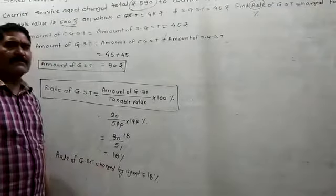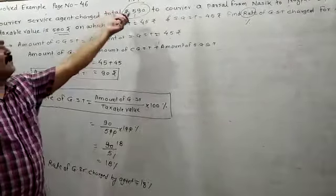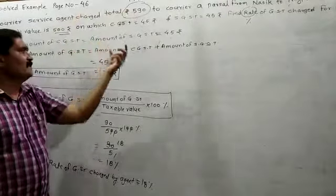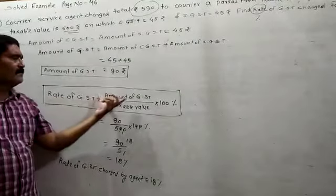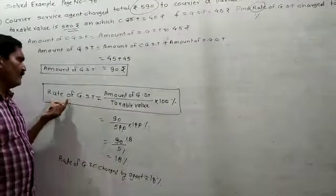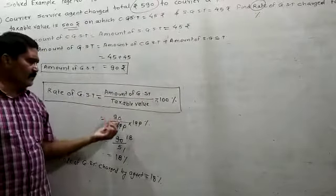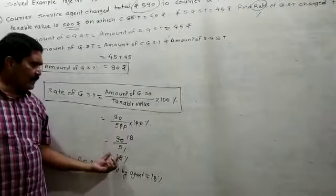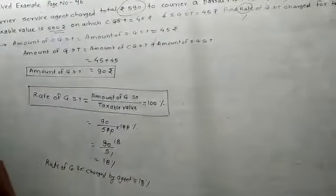Once again, to recap: first find the GST — since ₹590 includes taxable value plus GST, subtract the taxable value to get GST = ₹90. Then apply the formula: Rate of GST = (Amount of GST / Taxable Value) × 100% = (90 / 500) × 100% = 18%. Therefore, the rate of GST charged by the agent is 18%.